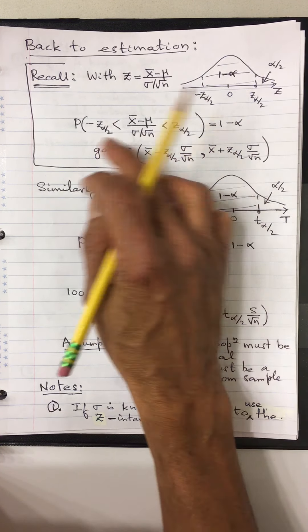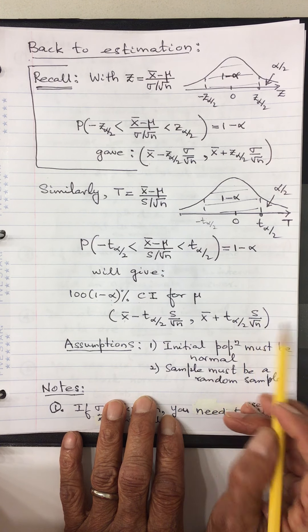We are looking at the interval from −t_{α/2} to t_{α/2}. If you do the same algebra, we end up with: the 100(1 − α)% confidence interval for μ is x̄ ± t_{α/2} · (s / √n). Instead of the z-table value I have the t-table value, and instead of σ I have s. It's exactly the same form as before, just with different values.